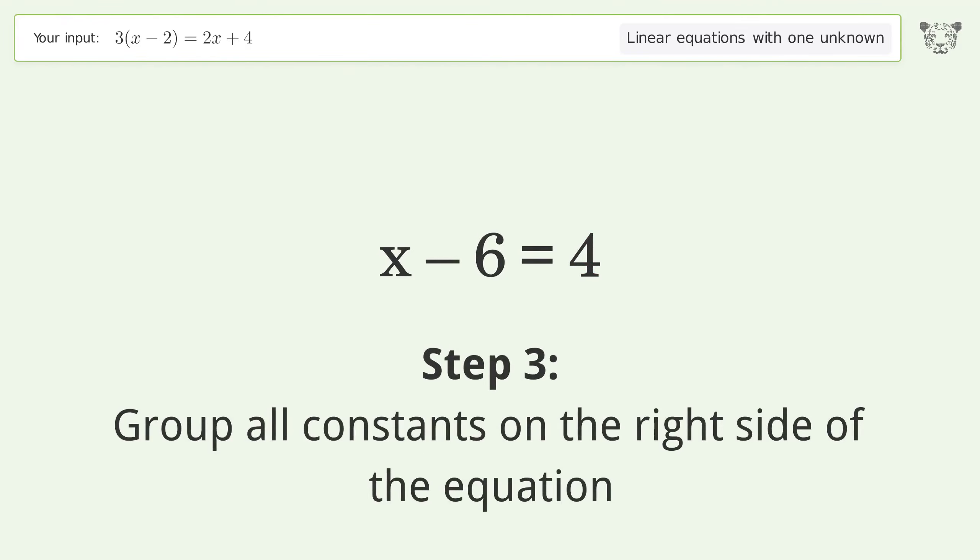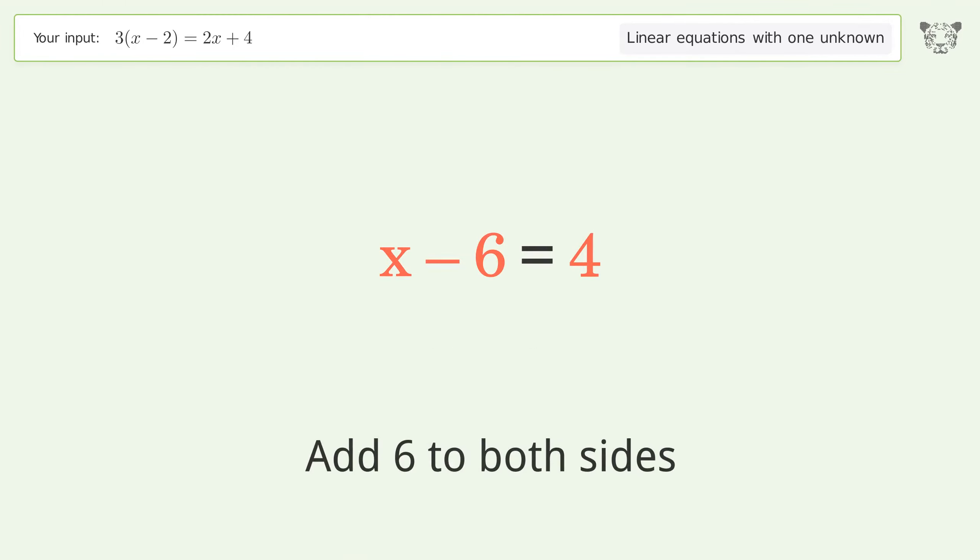Group all constants on the right side of the equation. Add 6 to both sides. Simplify the arithmetic.